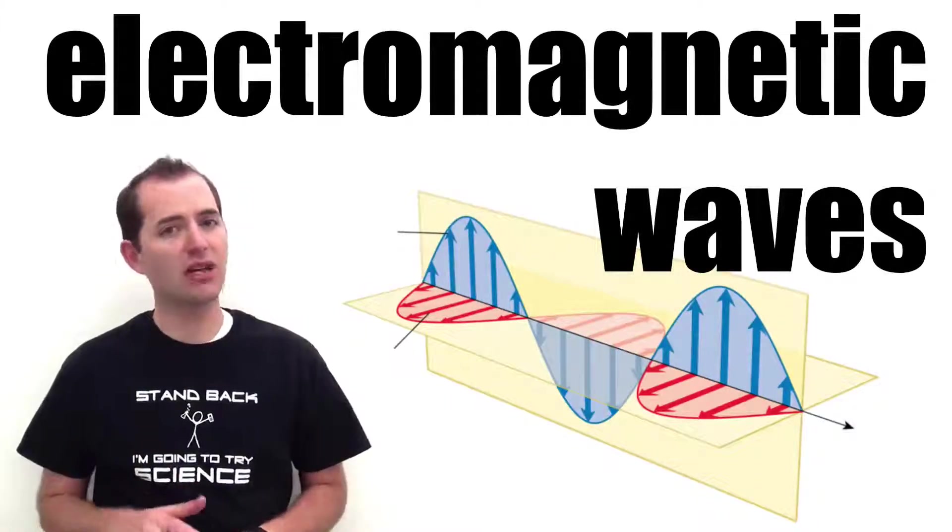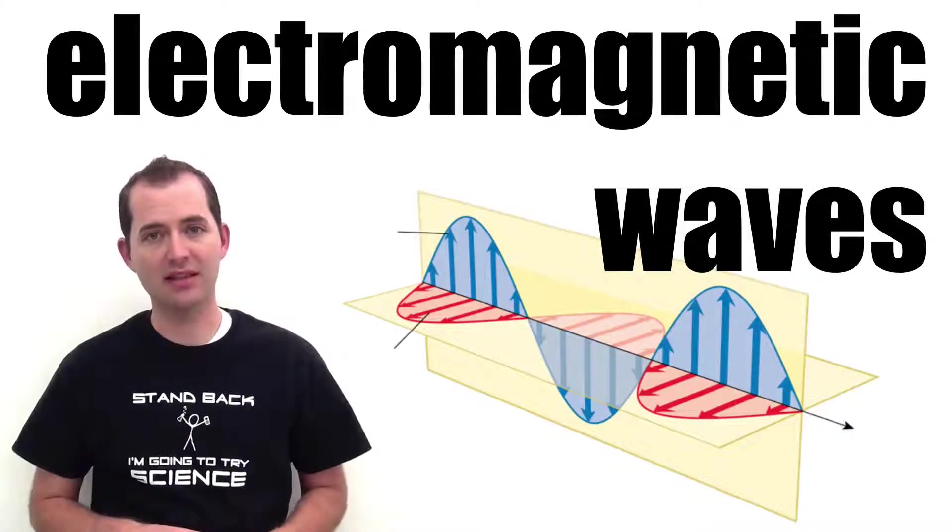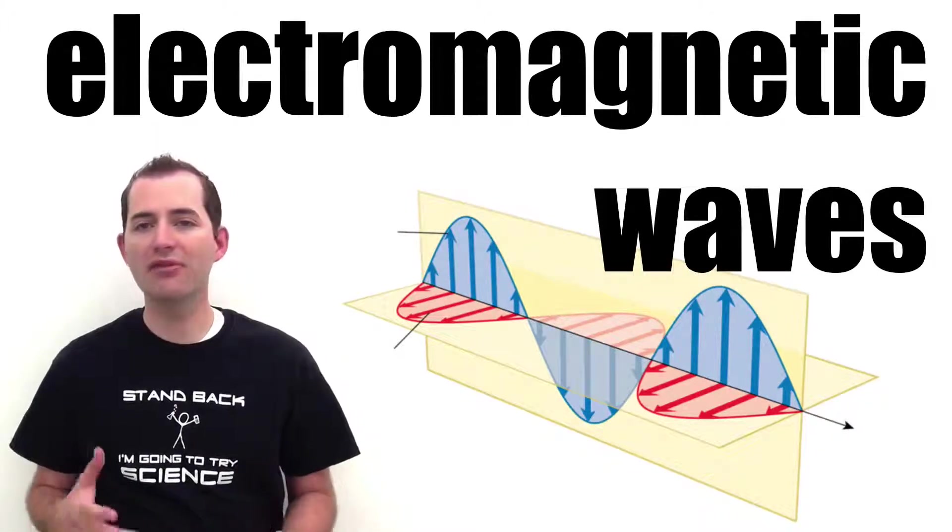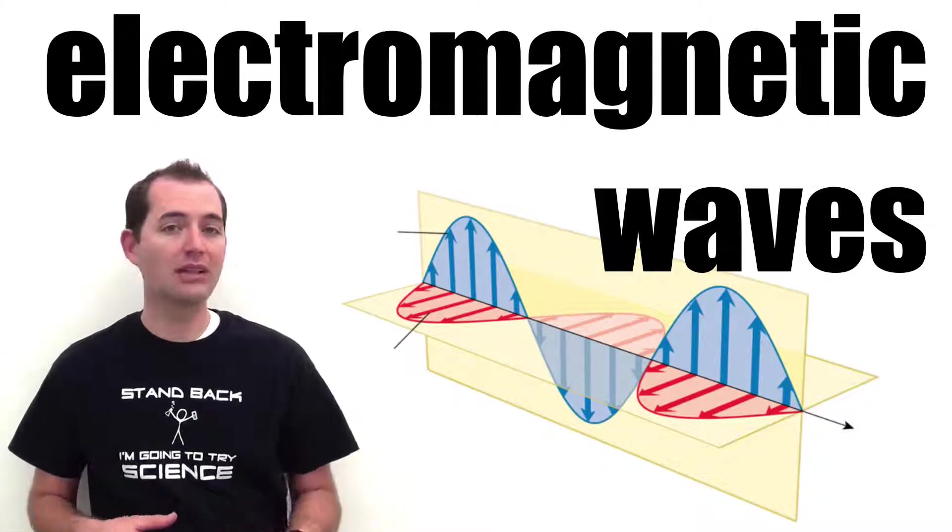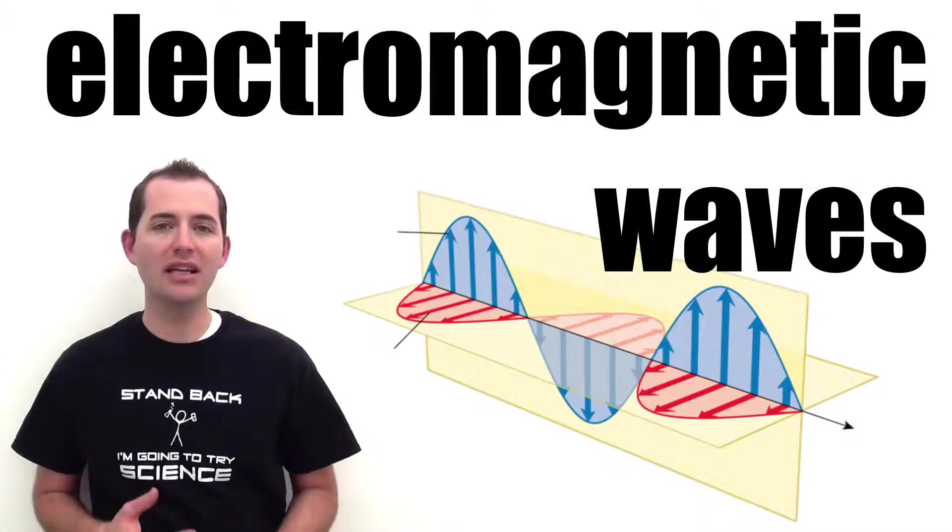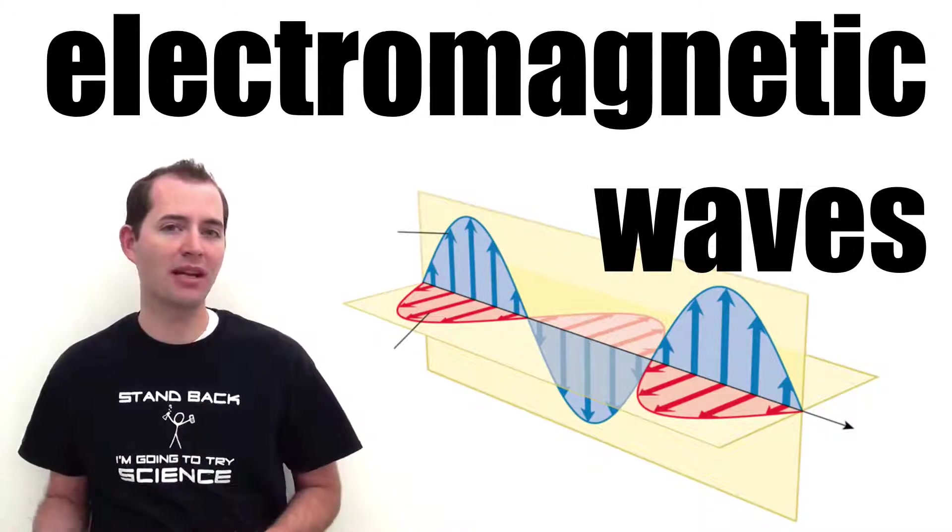Electromagnetic waves are waves that can travel through the vacuum of space. This is contrasted with mechanical waves which require a medium for the waves to pass through. For example, sound waves are a mechanical wave that require air or another medium for the waves to be propagated.